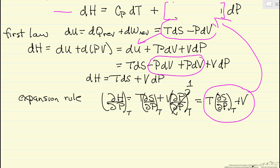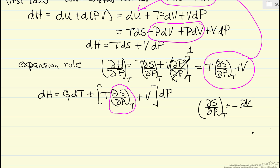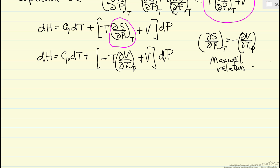Let me rewrite this equation now with the substitution. There's still a term that needs to be expressed in terms of pressure, volume, and temperature. I can use the Maxwell relationship — the partial of S with respect to pressure at constant temperature equals minus the partial of volume with respect to temperature at constant pressure. Now everything is in terms of just P, V, and T, so we can use an equation of state. I'll make this substitution.